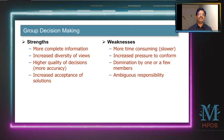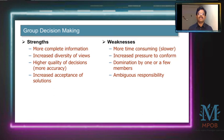Looking at group decision making strengths and weaknesses: strengths include more complete information, increased diversity of views, higher quality decisions, and increased acceptance of solutions. Weaknesses include being more time-consuming, as all members have to come to a consensus. You will also find several dynamics within the group while taking decisions — increased pressure to conform, domination by one or two people, and ambiguous responsibility.